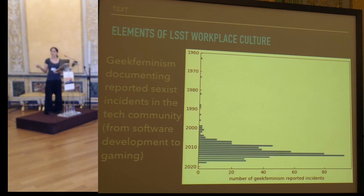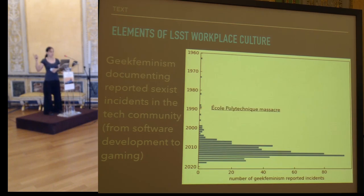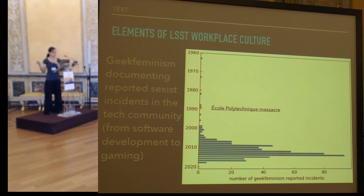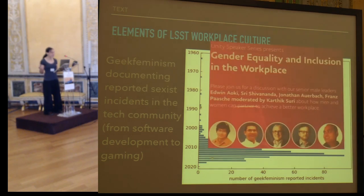Some of these are very obviously against the code of conduct. One of these incidents is the École Polytechnique massacre, where 14 women were killed by a man who was targeting women on purpose. Obviously murder is covered by the code of conduct and by the laws. But there are some rather more subtle things that are really affecting our inclusion.